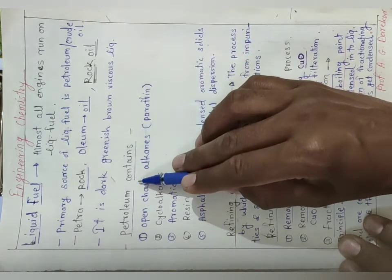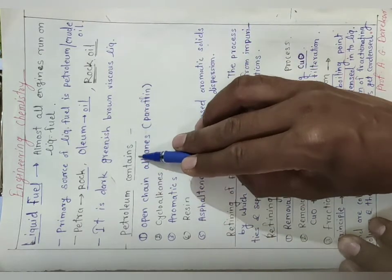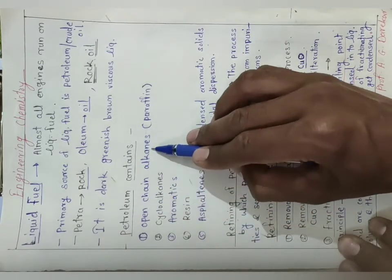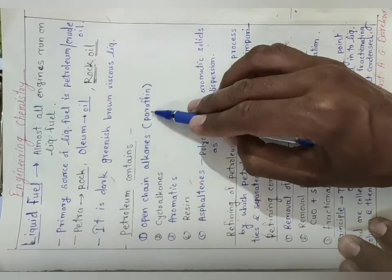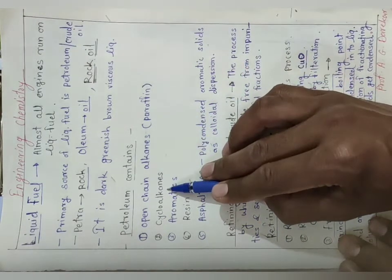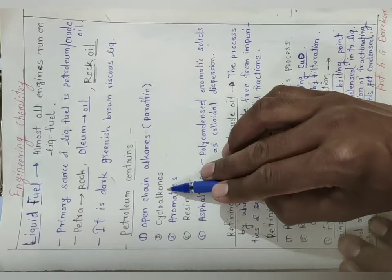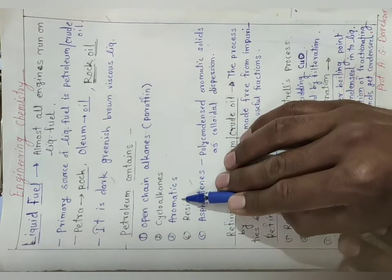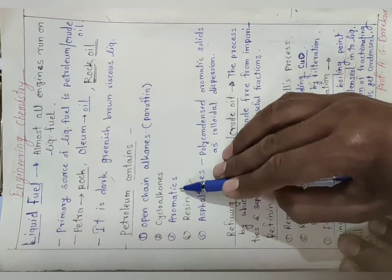Now we will see composition of petroleum. Petroleum contains open chain alkanes, means paraffin - straight chain alkanes and branched chain alkanes. Second, cycloalkanes like cyclopentane and cyclohexane. Then it also contains aromatic compounds like benzene and naphthalene.